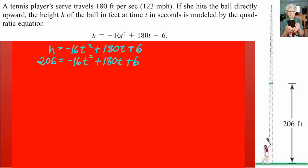Notice it's a quadratic equation, so we have to use the zero principle and subtract 206 from both sides of the equation. That'll leave us with zero equals negative 16t squared plus 180t minus 200.